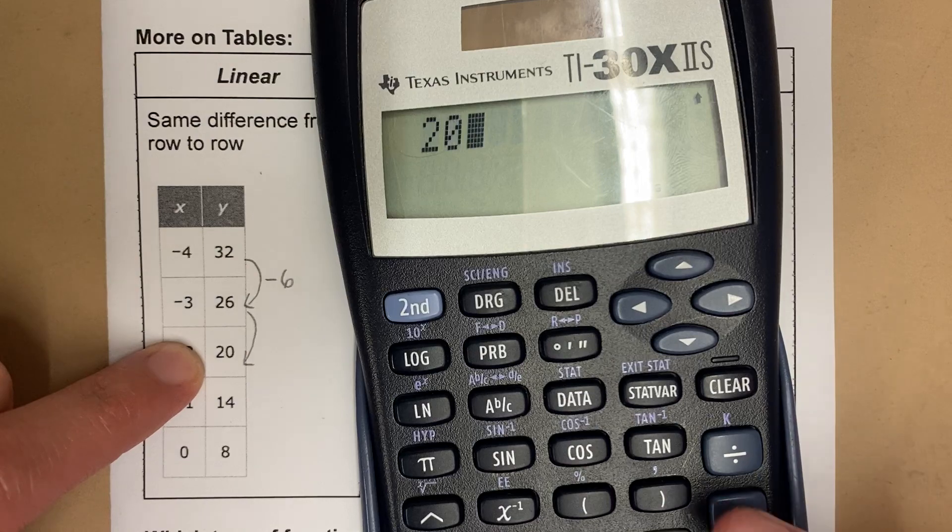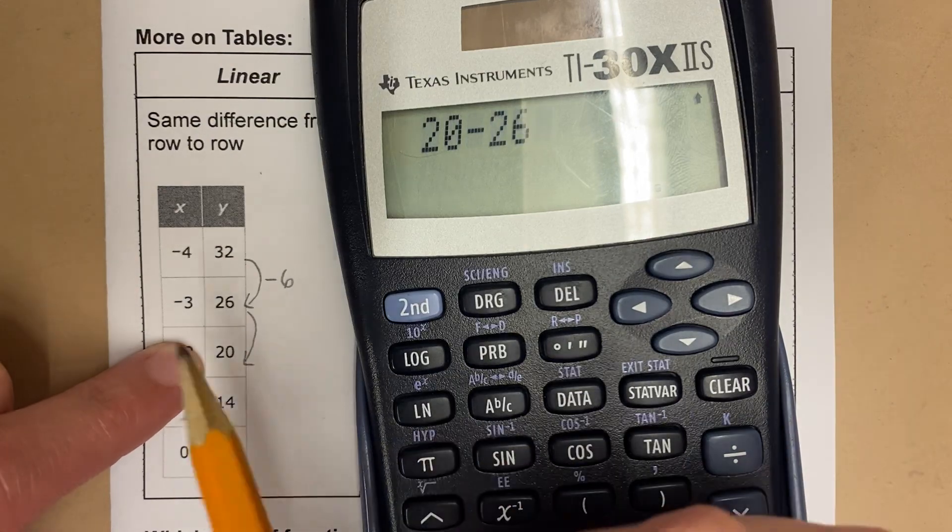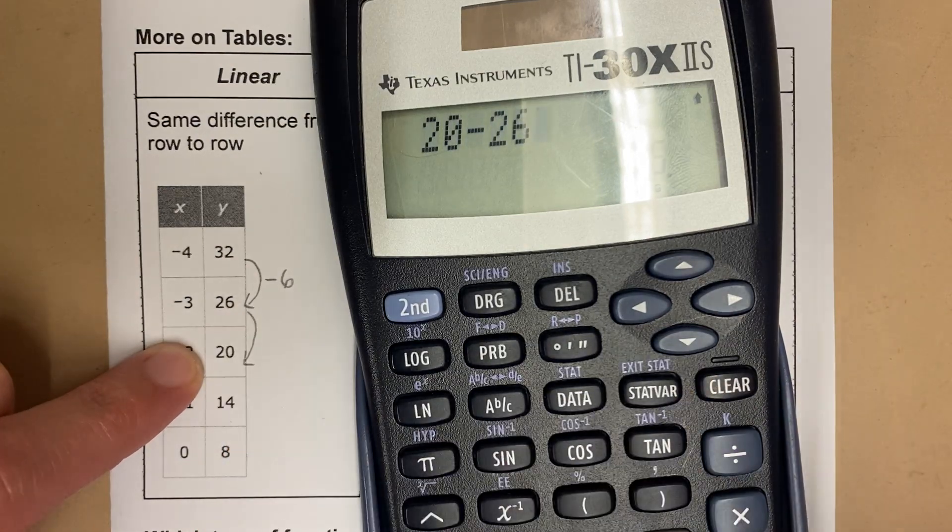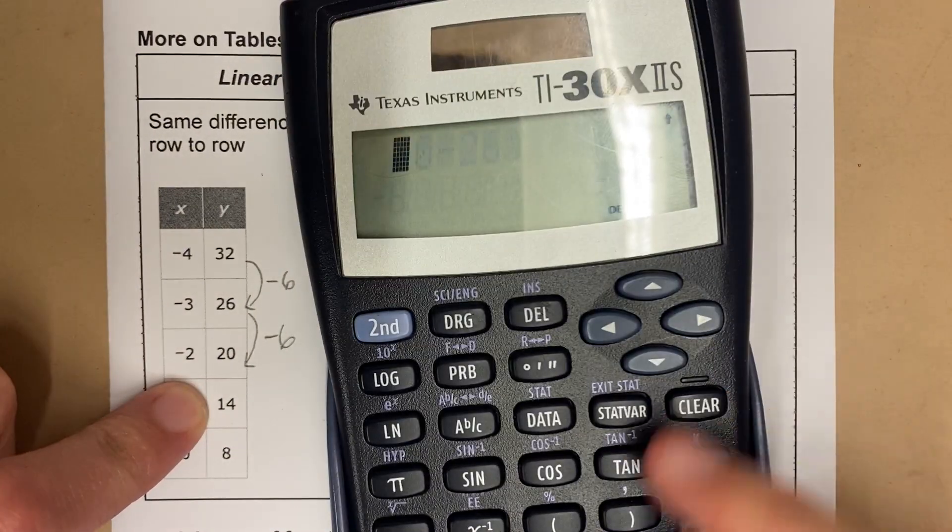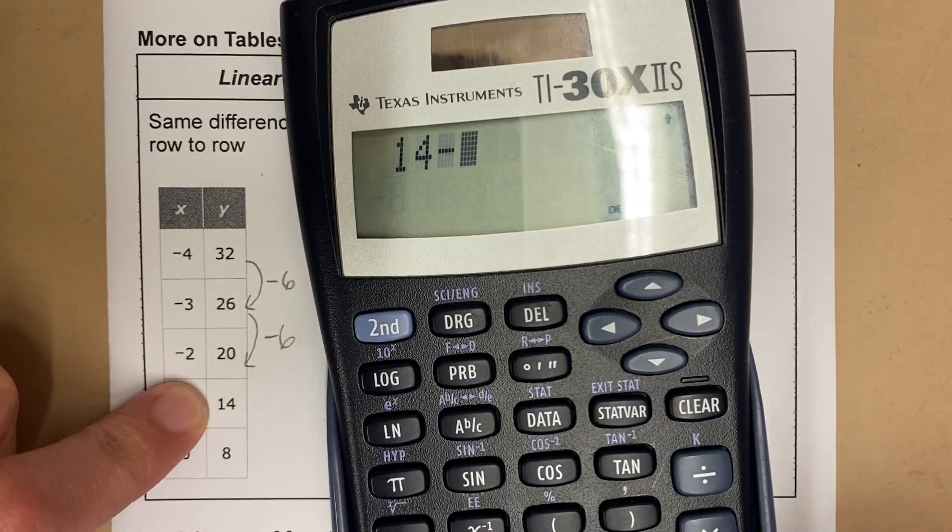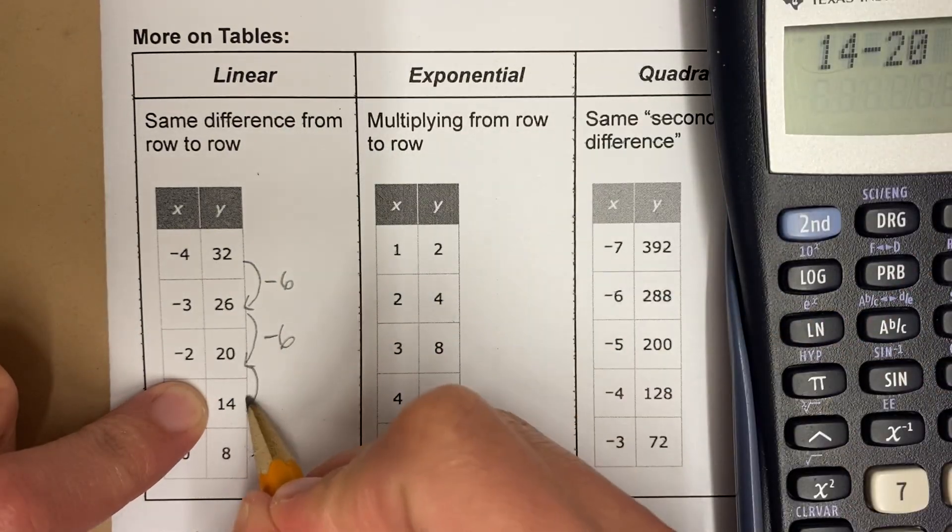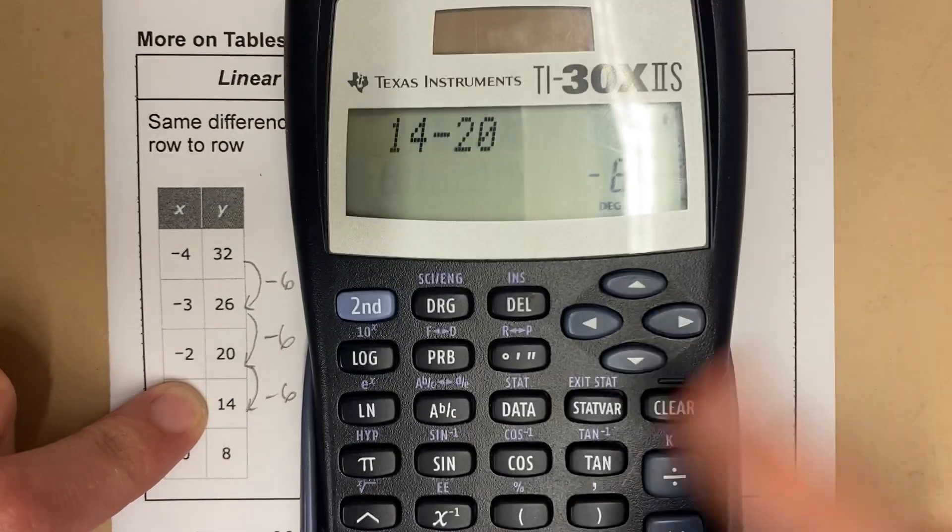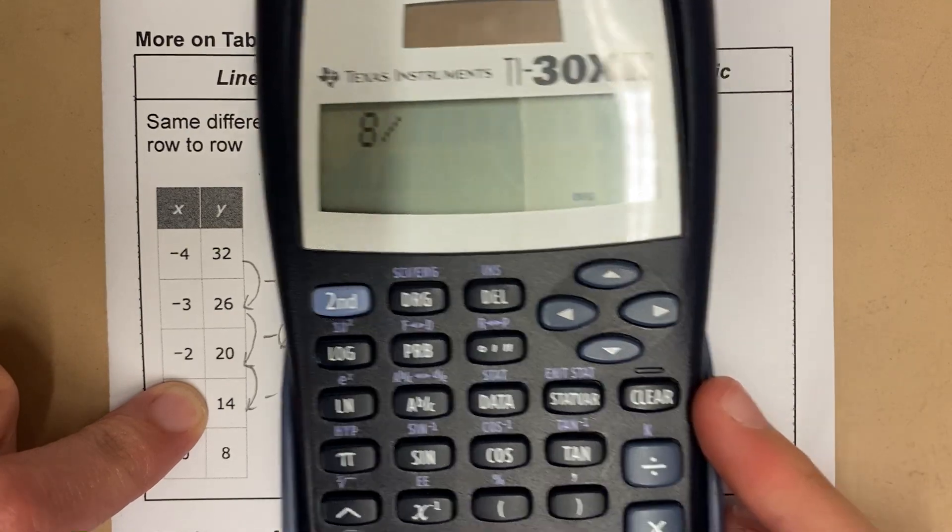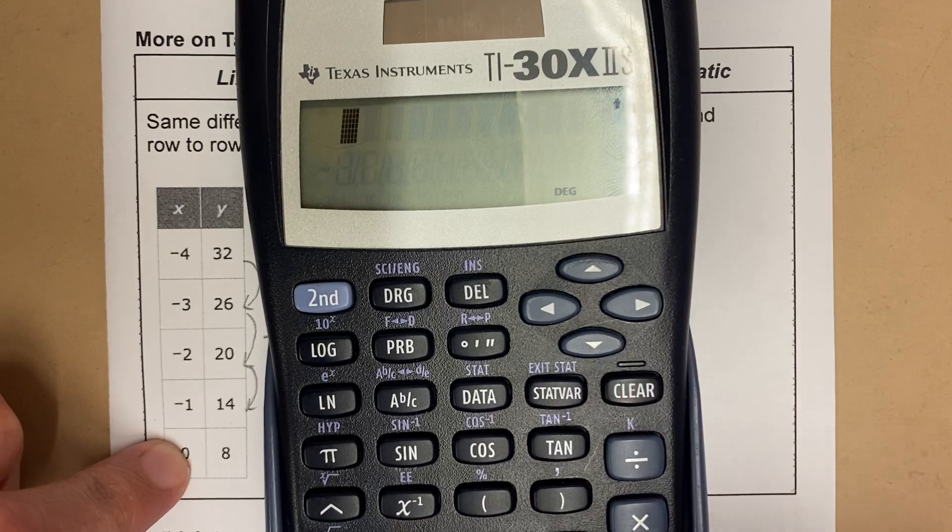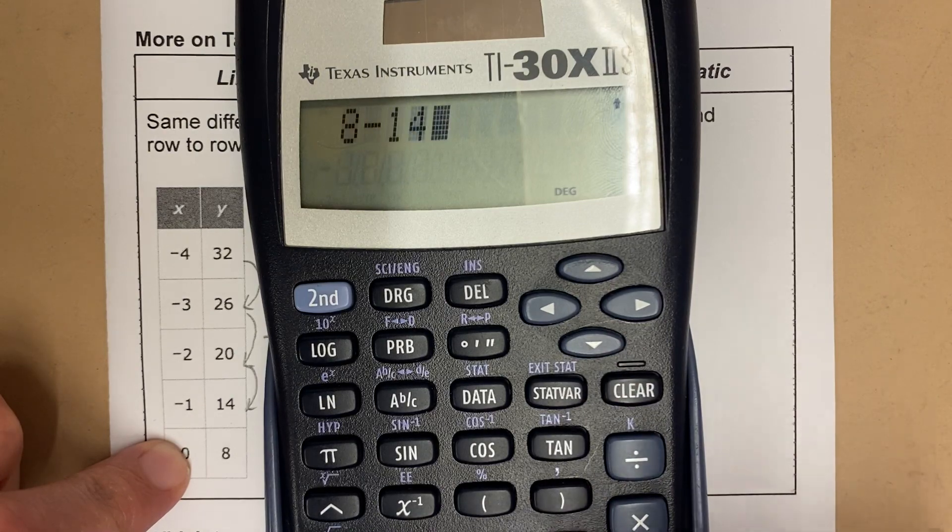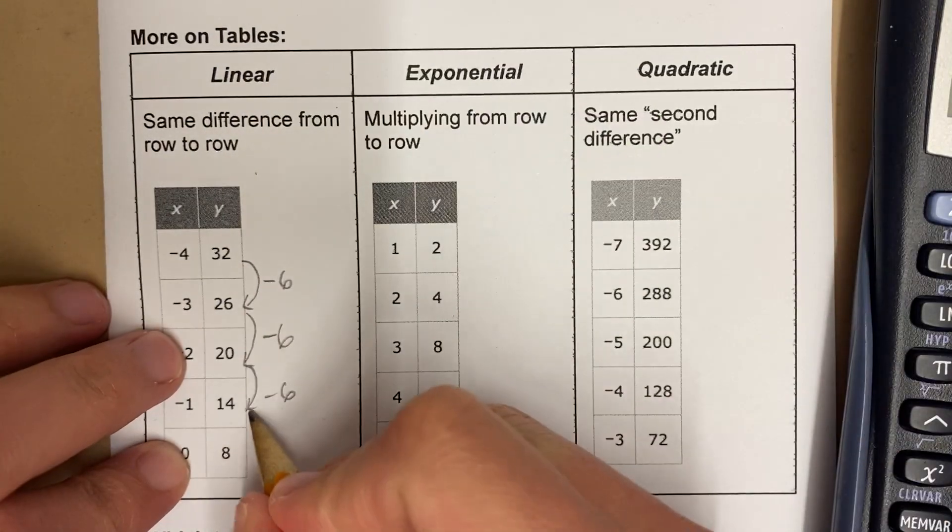If I do 20 minus 26, I'm doing bottom minus top, I get negative 6 again. You could maybe do this in your head, but you don't need to. You can use the calculator as a tool. 8 minus 14 is also negative 6.